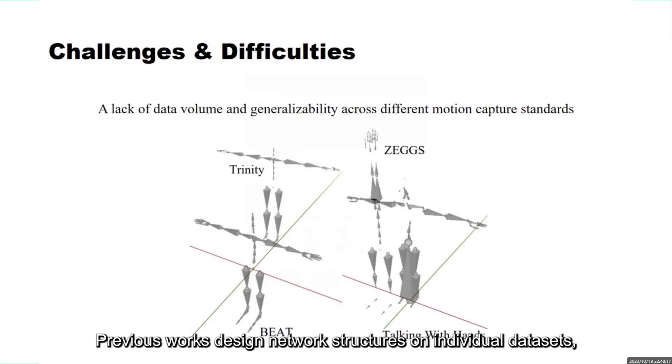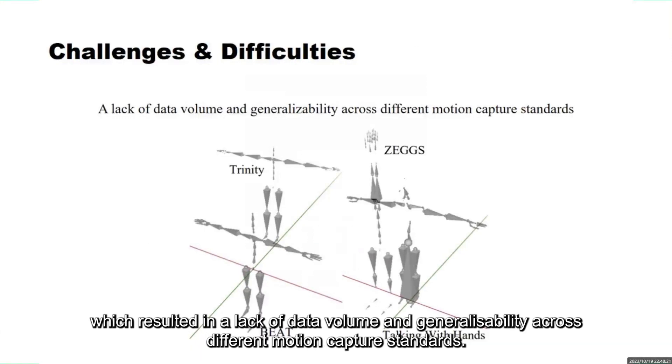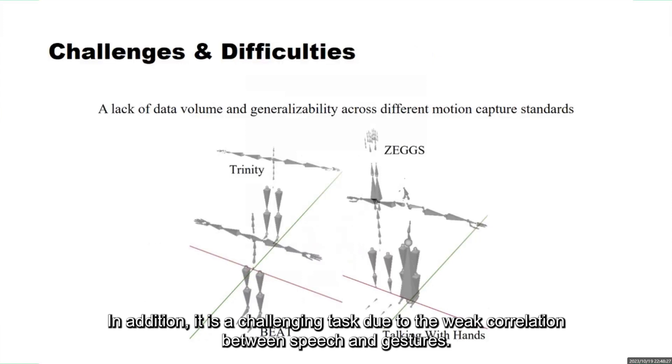Previous works design network structures on individual datasets, which results in a lack of data volume and generalizability across different motion capture standards. In addition, it is a challenging task due to the weak correlation between speech and gestures.